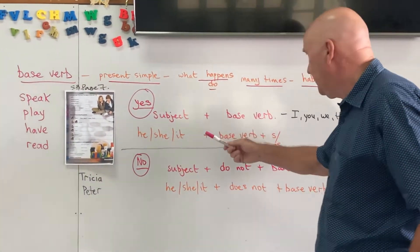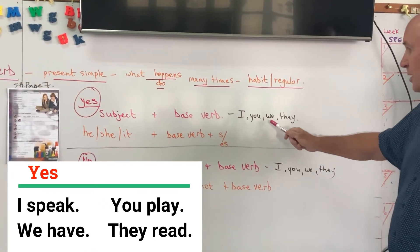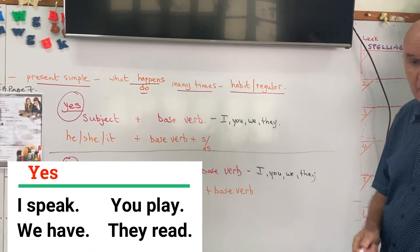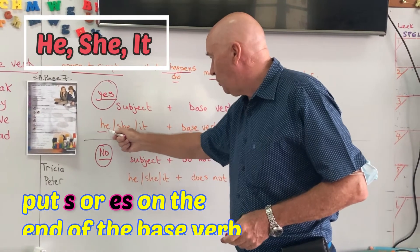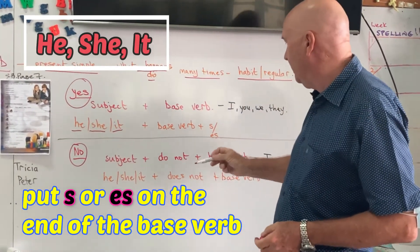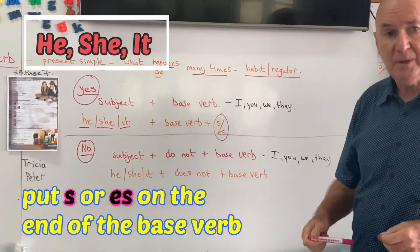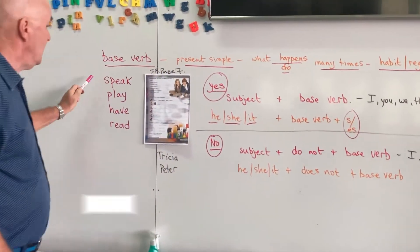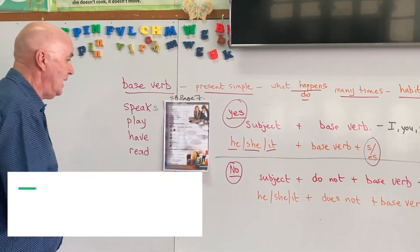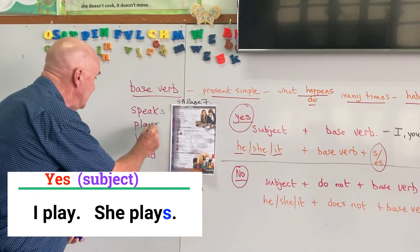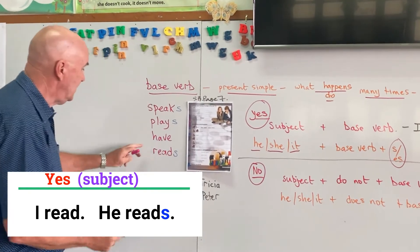Here are four base verbs: speak a language, play football, have a pet, read a book. If I want to say yes — I speak, you play, we have, they read. But with the simple present tense, if our subject is one boy, one girl, or one thing, we put S or ES on the end of the base verb. So: I speak, but he speaks; I play, but she plays; I read, but he reads.